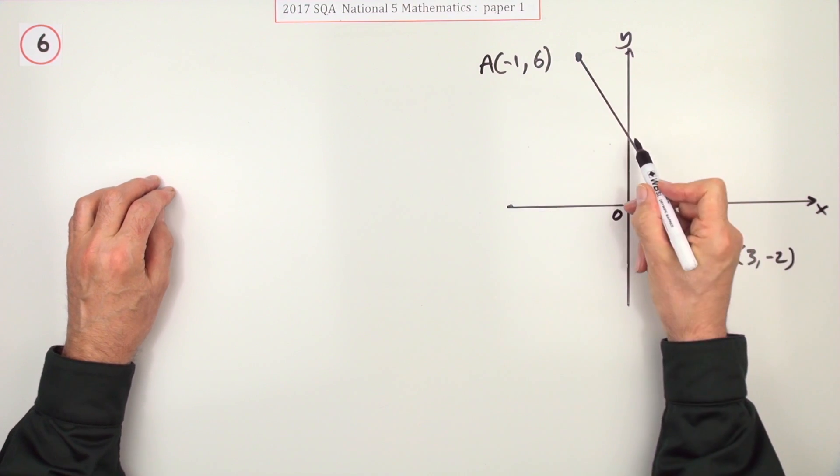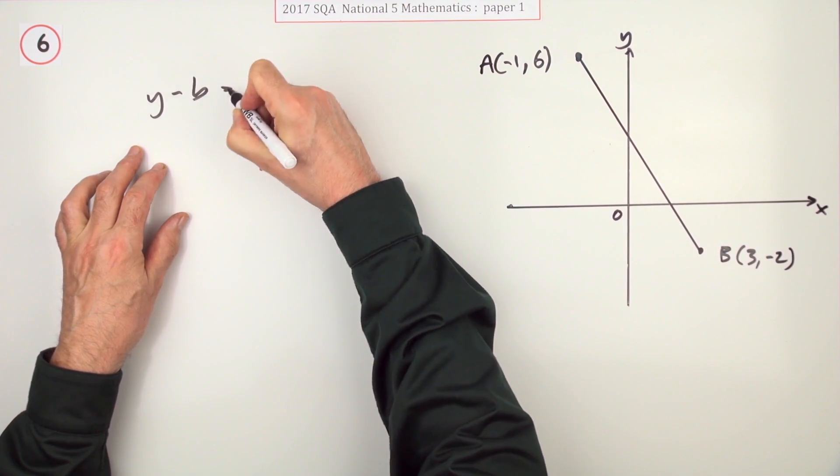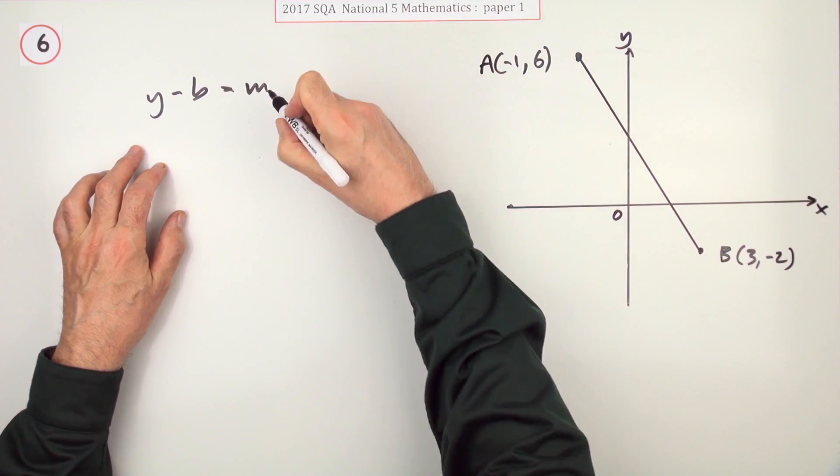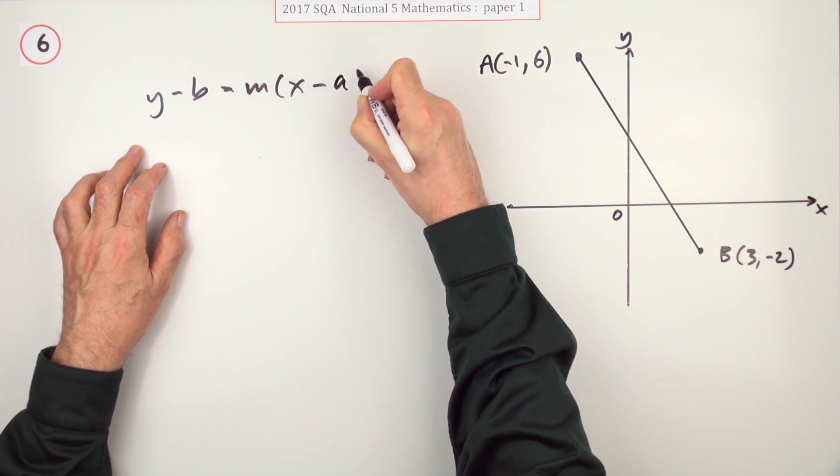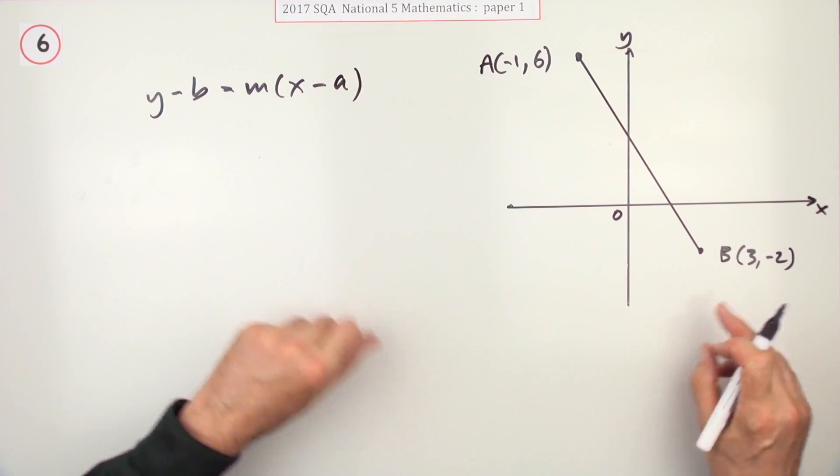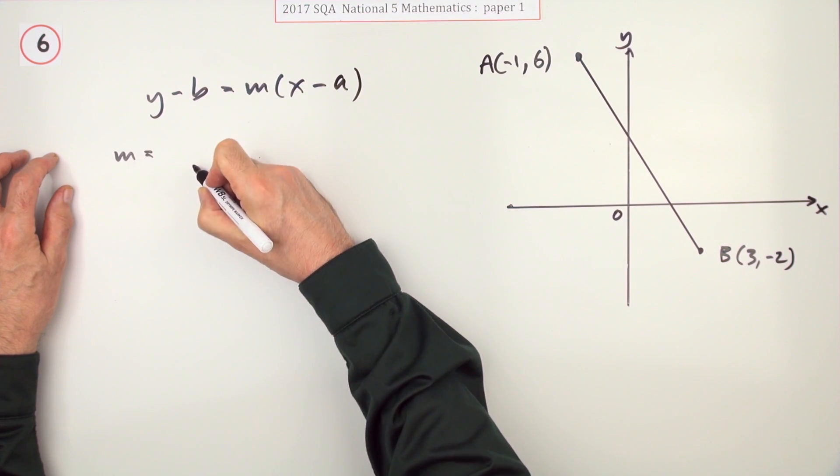Well, since you don't know where it cuts the y-axis, you're going to use that form of y minus b equals m the gradient of the line times x minus a. You've got 2 points to choose from for your a and b's, but to get m you have to work this one out. So what is the gradient?